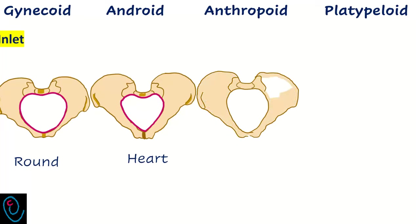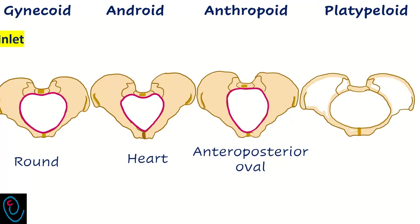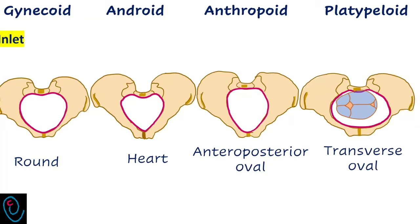In anthropoid pelvis, the inlet is anteroposteriorly oval, so engagement occurs in direct occipital anterior or direct occipital posterior position. In platypelloid pelvis, the inlet is transversally oval, so engagement occurs in occipital lateral position and asynclitism is common.